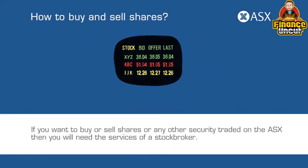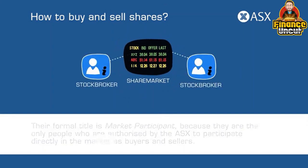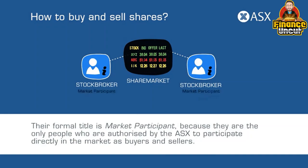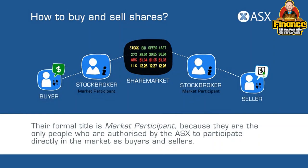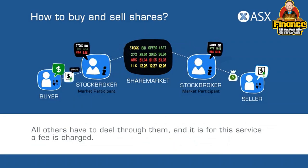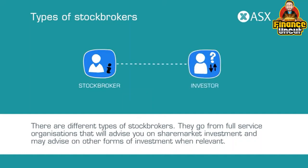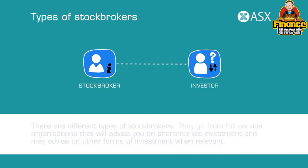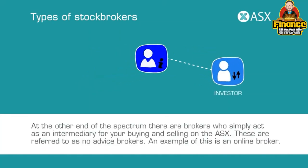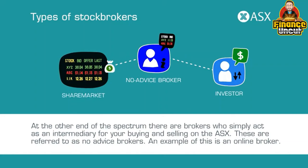If you want to buy or sell shares or any other security traded on the ASX, you will need the services of a stockbroker. Their formal title is market participant because they are the only people authorised by the ASX to participate directly in the market as buyers and sellers. All others have to deal through them, and it is for this service that a fee is charged. There are different types of stockbrokers — from full-service organisations that advise you on share market investment, to brokers who simply act as an intermediary for buying and selling. These are referred to as no-advice brokers.